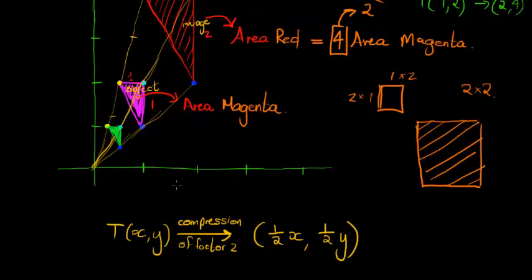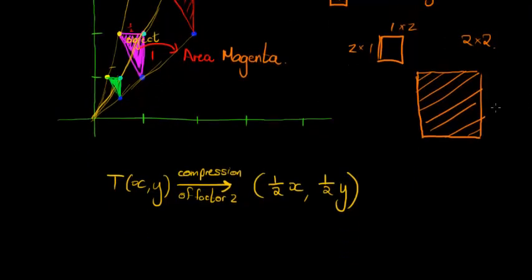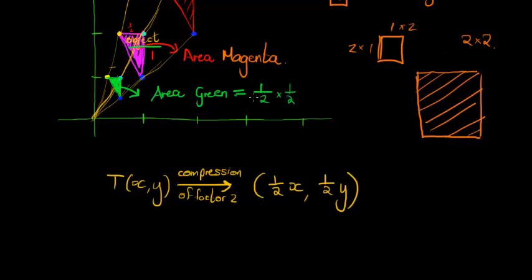The compressed image is the transformation image of the original. What is the area of the green triangle compared to the area of the magenta triangle? It's smaller — each side length has been halved, so we take ½ times ½ because we're working in two dimensions. That's (½)² = ¼ of the area of magenta.